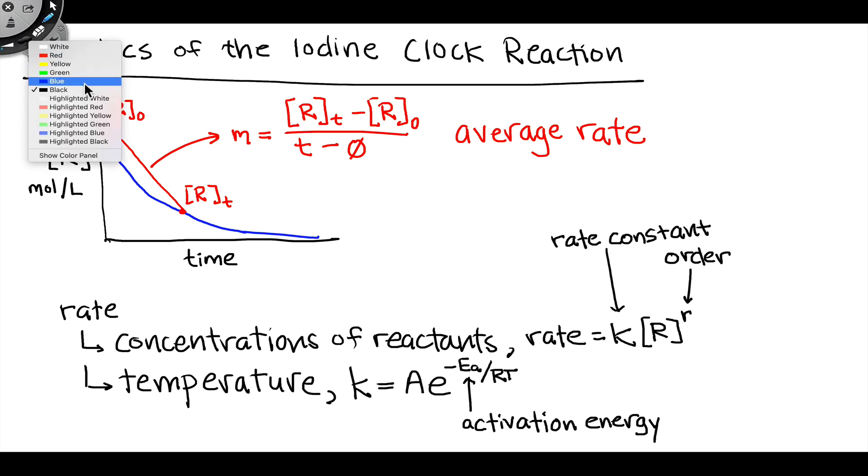Our two major goals for this experiment will be to determine the kinetic orders associated with two reactants in the iodine clock reaction, iodide I- and hydrogen peroxide, and to measure the activation energy by looking at the temperature dependence of the rate of the reaction.